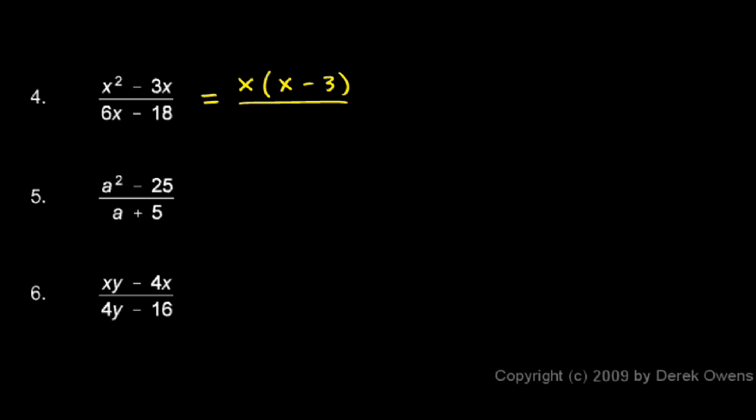And then on the bottom, I have 6x minus 18. Well both of those terms have a factor of 6. So I can factor out the 6. And when I take the 6 out of here, I'm left with an x. And when I take a 6 out of there, I'm left with a 3. And again you could redistribute and realize you have 6 times x minus 6 times 3, or 6x minus 18.